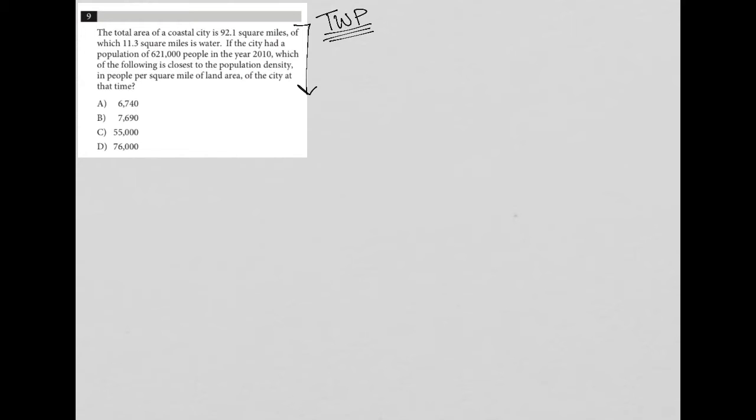Let's get started and see what we can extract from reading this question. The question says the total area of a coastal city is 92.1 square miles. So I'm going to say total area equals 92.1 miles squared, because that's what square miles are.